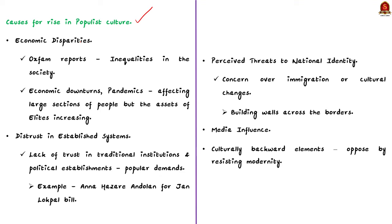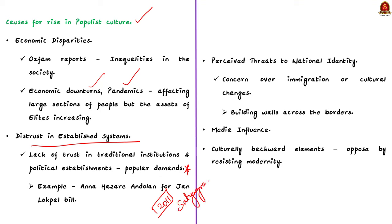Apart from this, economic downturns and pandemics are affecting large sections of people while the assets of elites are on the rise. This economic disparity is leading to popular discontent and the demand for populism. Secondly, distrust in established systems — lack of trust in traditional institutions and political establishments leads to popular demands for change. For example, in 2011, Anna Hazare participated in the Satyagraha movement campaigning for a stronger anti-corruption Lokpal bill in the Indian parliament.